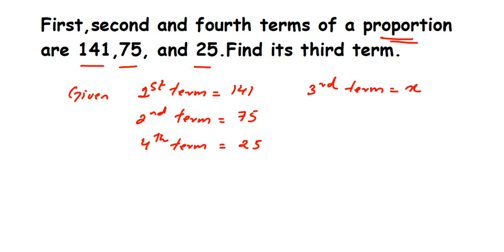Since they are in proportion, the first two terms will be in ratio: 141 is to 75, which is in proportion with the third and fourth terms: x is to 25. So 141:75 :: x:25.